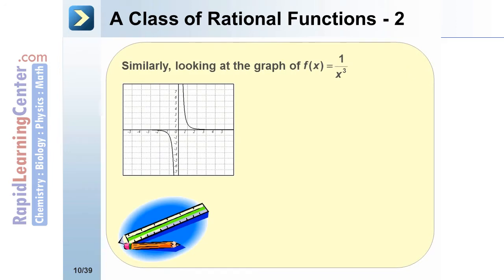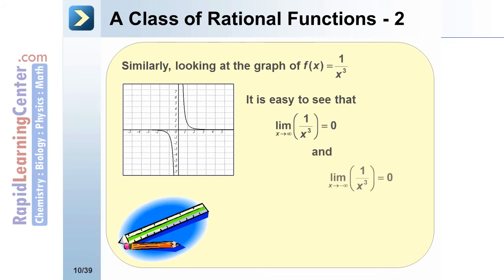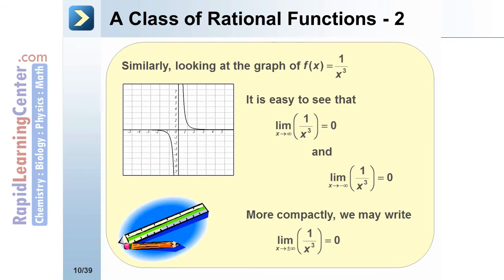Now let's consider f(x) = 1/x³. From the graph, as x approaches positive infinity, the y-values all approach 0, so the limit as x approaches infinity of 1/x³ is 0. Similarly, the limit as x approaches negative infinity of 1/x³ is also 0. So more compactly, the limit as x approaches positive or negative infinity of 1/x³ equals 0.